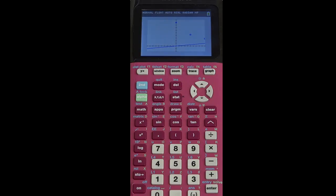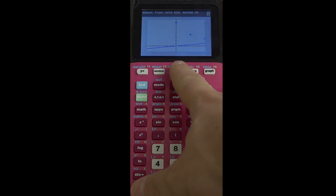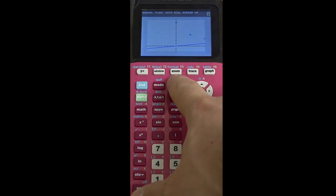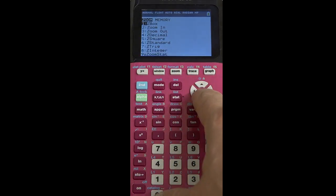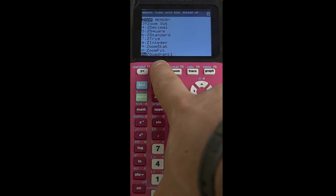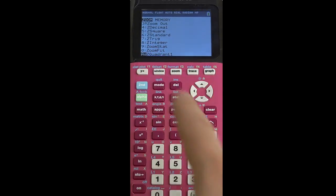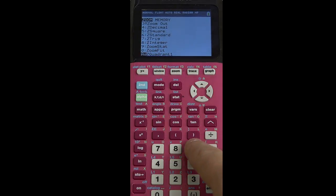But this is still not a great graph. I can see a lot of my function, but I can't see all the data points that I entered. So here again, there are some zoom features that are great. So you press zoom, and again, you can either just press the number or you can scroll down. Here we can see zoom stat, zoom statistics automatically get me a window that will fit all of my data in view. So I'm just going to press 9.